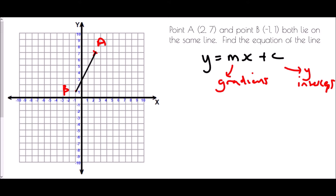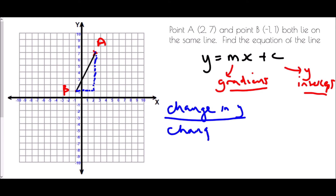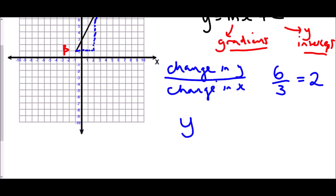I want to think about these two elements: the gradient and the intercept. Beginning with gradient — if you're finding the gradient of a line you form a triangle between the two points. Gradient is change in y over change in x. The change in y here: the line has gone up 6 spaces. The change in x: it's gone 3 along. Therefore the gradient is 2, so my equation is y equals 2x plus c.